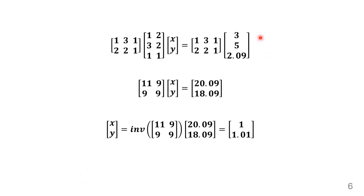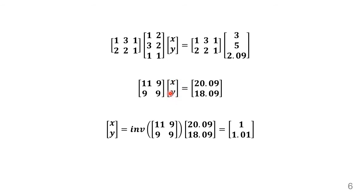From the theory, we apply AᵀA·x̂ = Aᵀb. Computing AᵀA gives the matrix [[11, 9], [9, 9]], and Aᵀb gives the vector [20.09, 18.09].